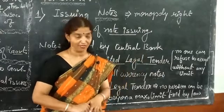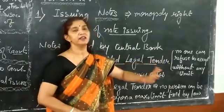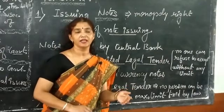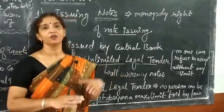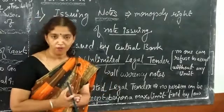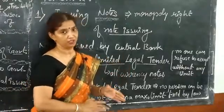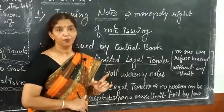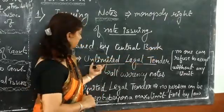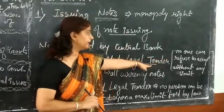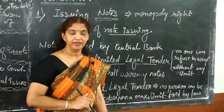Unlimited legal tender has no maximum or minimum limit. No one can refuse to accept this type of money without any limit. For example, if a person is repaying a loan, that person cannot refuse the transaction by law. No one can refuse to accept unlimited legal tender — there is no maximum limit.